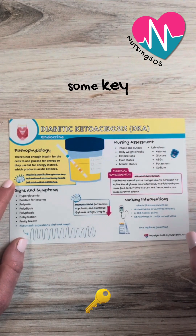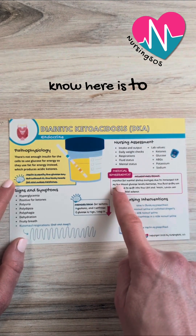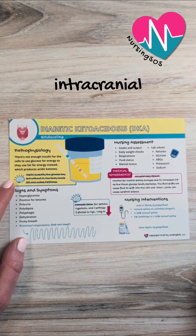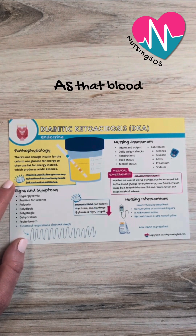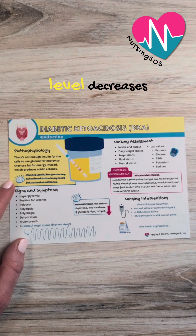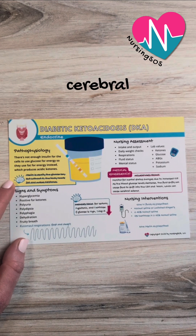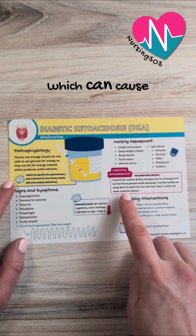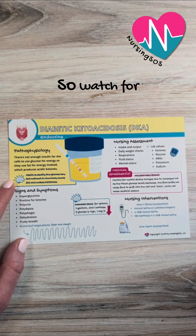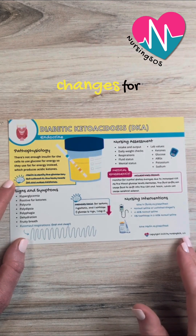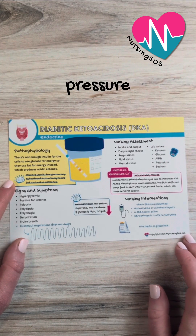Now, some key NCLEX points to know here: monitor for mental status changes because of increased intracranial pressure. As that blood glucose level decreases, fluid can shift into the cerebrospinal fluid in the brain, which can cause cerebral edema. So watch for those mental status changes for increased intracranial pressure.